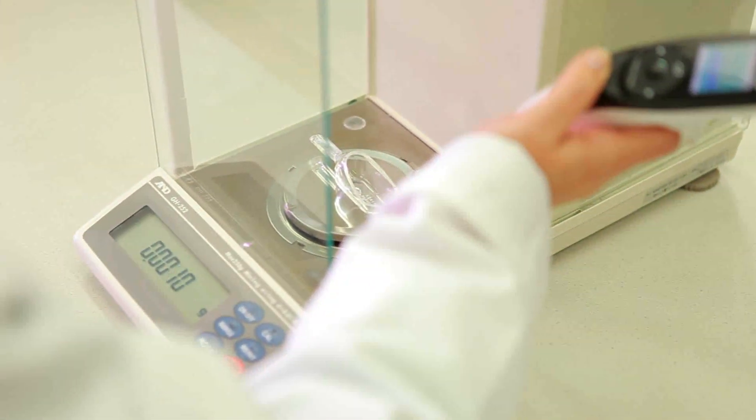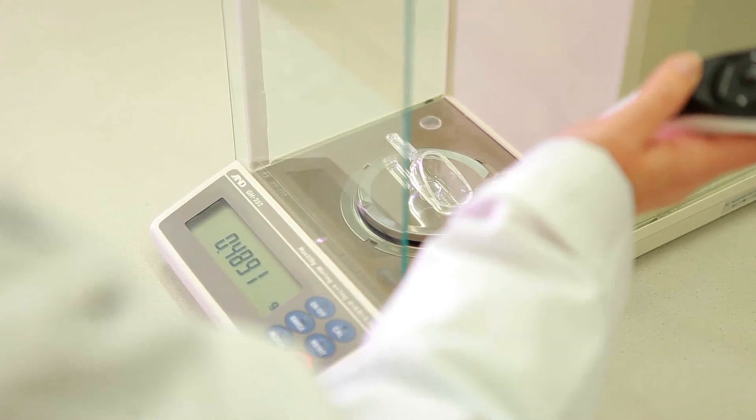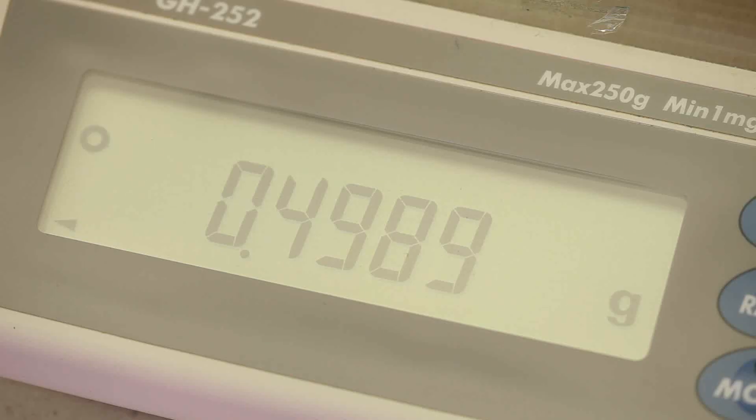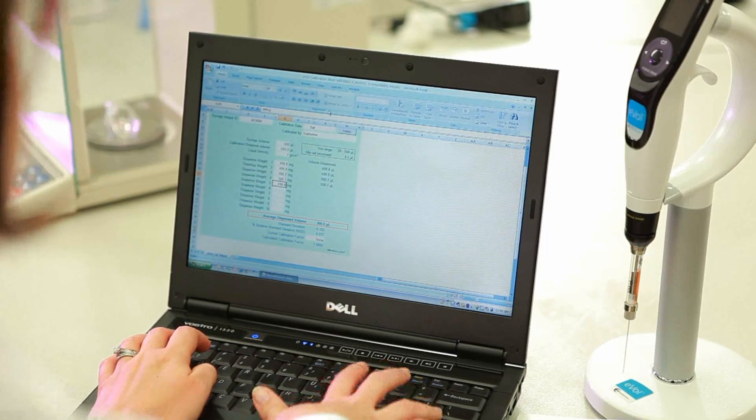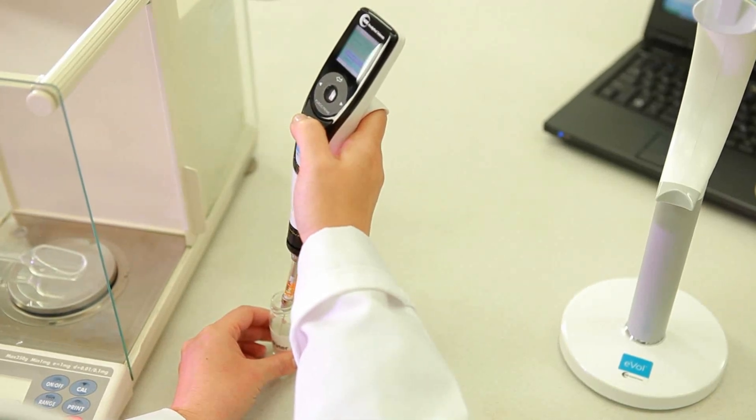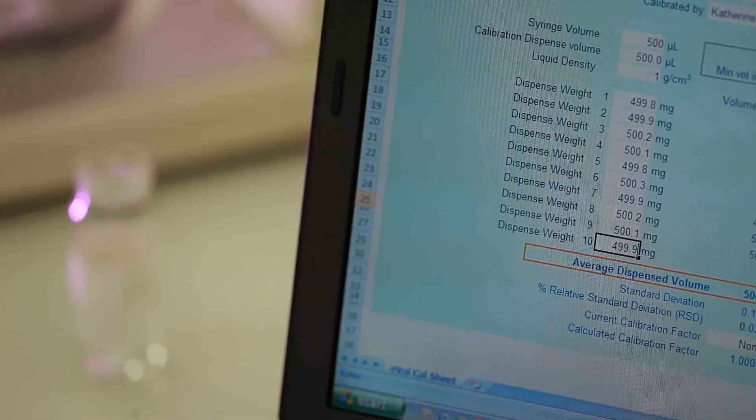Dispense the liquid into a weighing container on a balance capable of weighing the dispensed liquid to at least 4 decimal places. Record the weight of the calibration liquid from the balance and input the weight into the worksheet. Repeat this 10 times and enter the average dispensed volume from the worksheet into your EVOL to enable the calculation of the calibration factor.